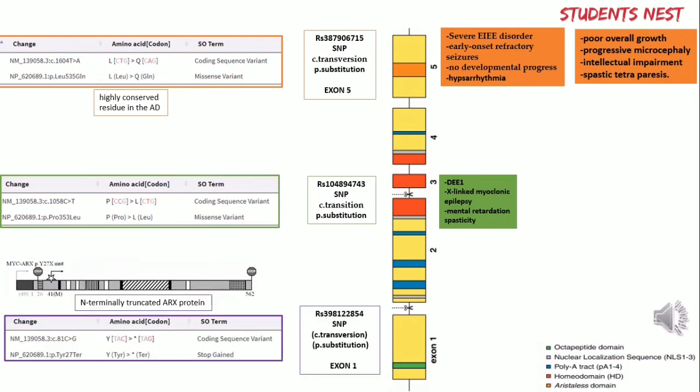Finally, RS398122854 is a stop-gain variant — a transversion mutation in exon 1 of the ARX gene that leads to a stop codon. The expressed ARX protein is severely truncated, containing only 26 residues and lacking all functional domains of a normal ARX protein. This was observed in two male first cousins with a severe form of EIEE; both had early onset of refractory seizures and no developmental progress.